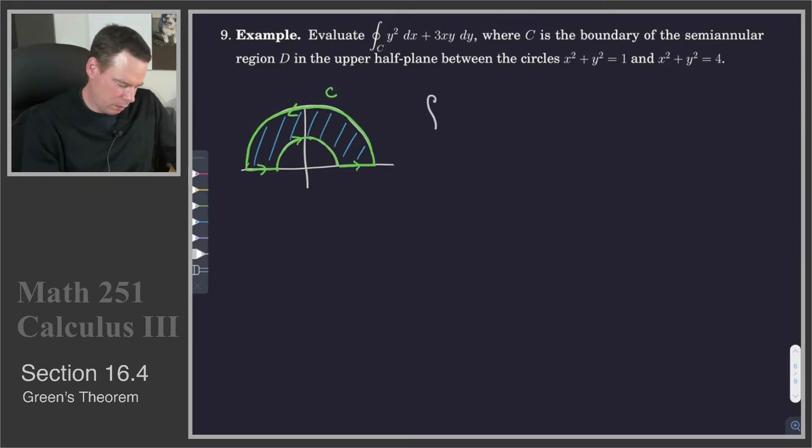So we are interested in the integral of y squared dx plus 3xy dy. But by Green's Theorem, we can convert this to an integral over the region.